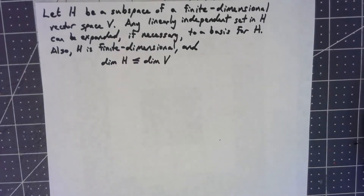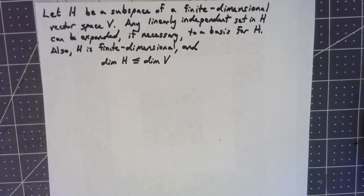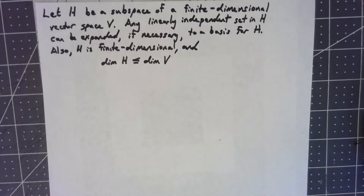Let's take a look at a couple of theorems that involve dimension. Let's say we've got a finite dimensional vector space V, and H is a subspace of V. If we take a linearly independent set in H, that set can be expanded to create a basis for the subspace. Further, if you're a subspace of a finite dimensional vector space, the subspace has to be finite dimensional as well, and the dimension of H has to be less than or equal to the dimension of V.